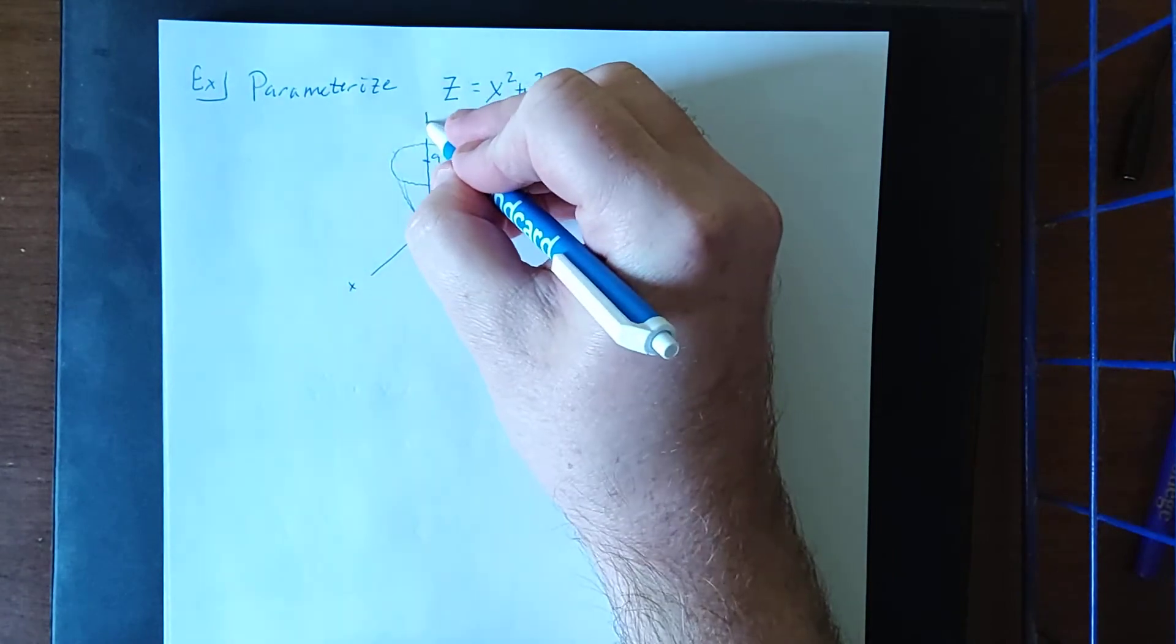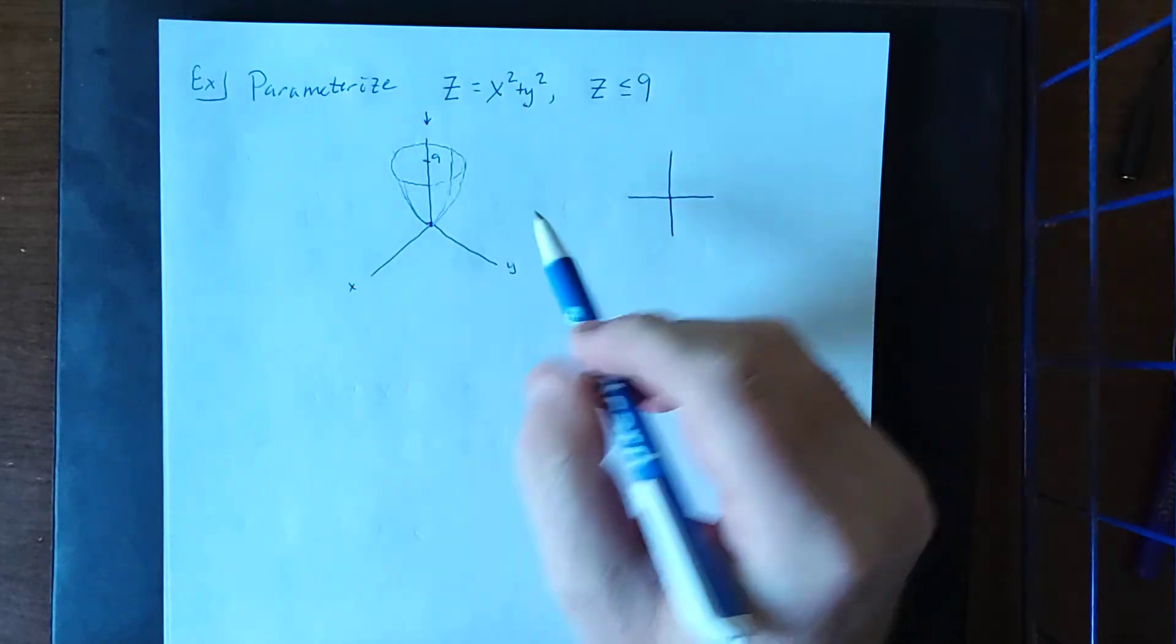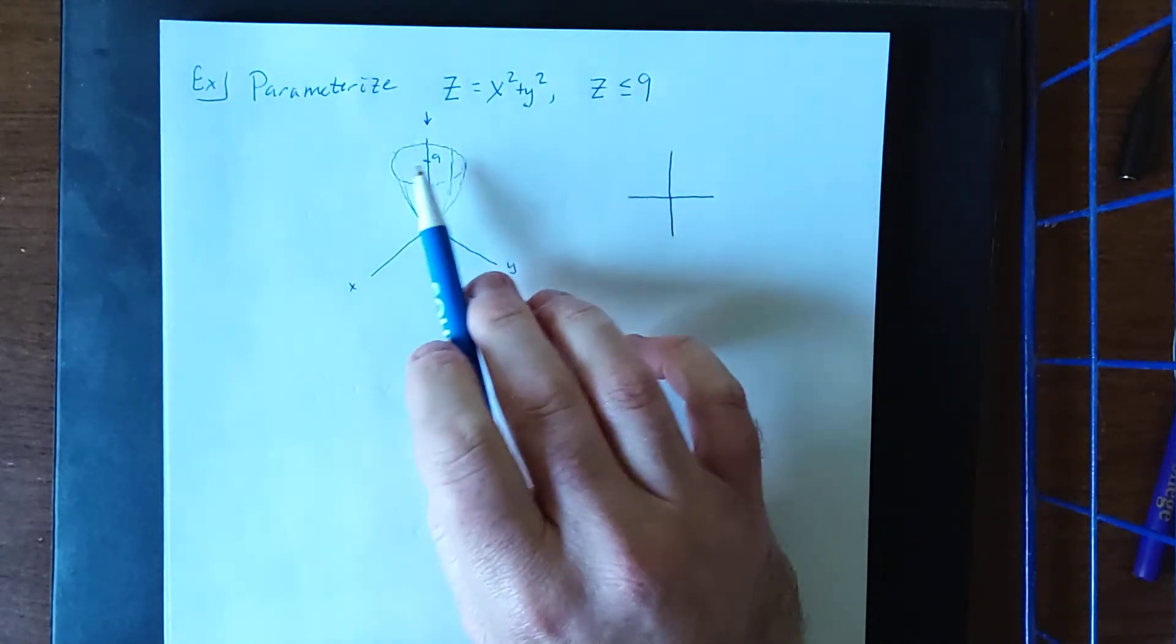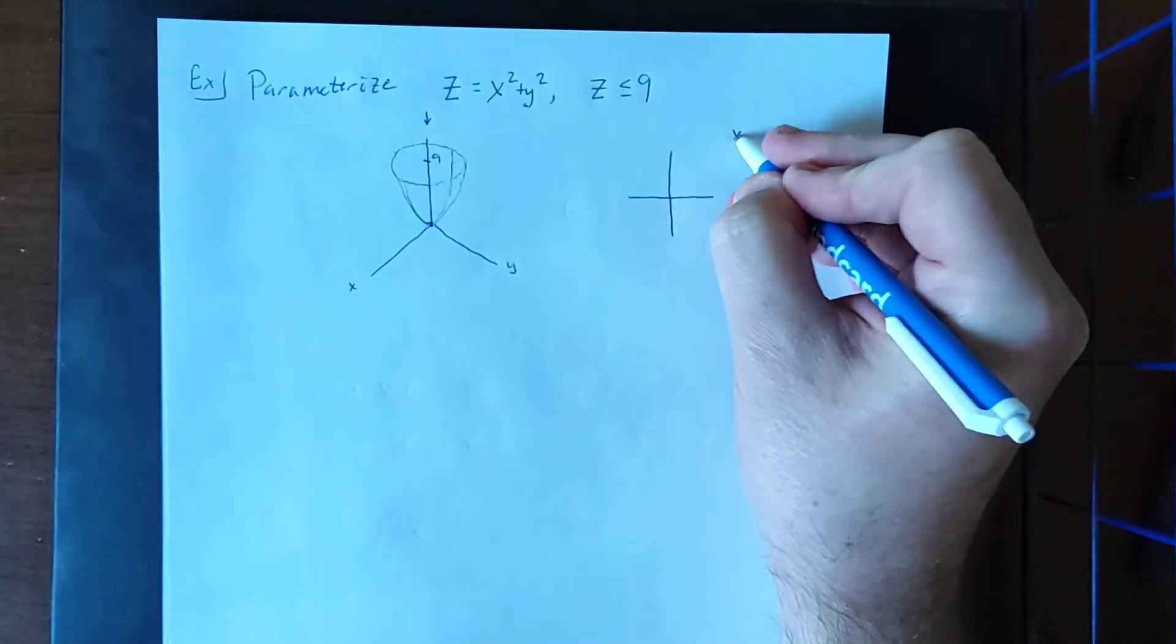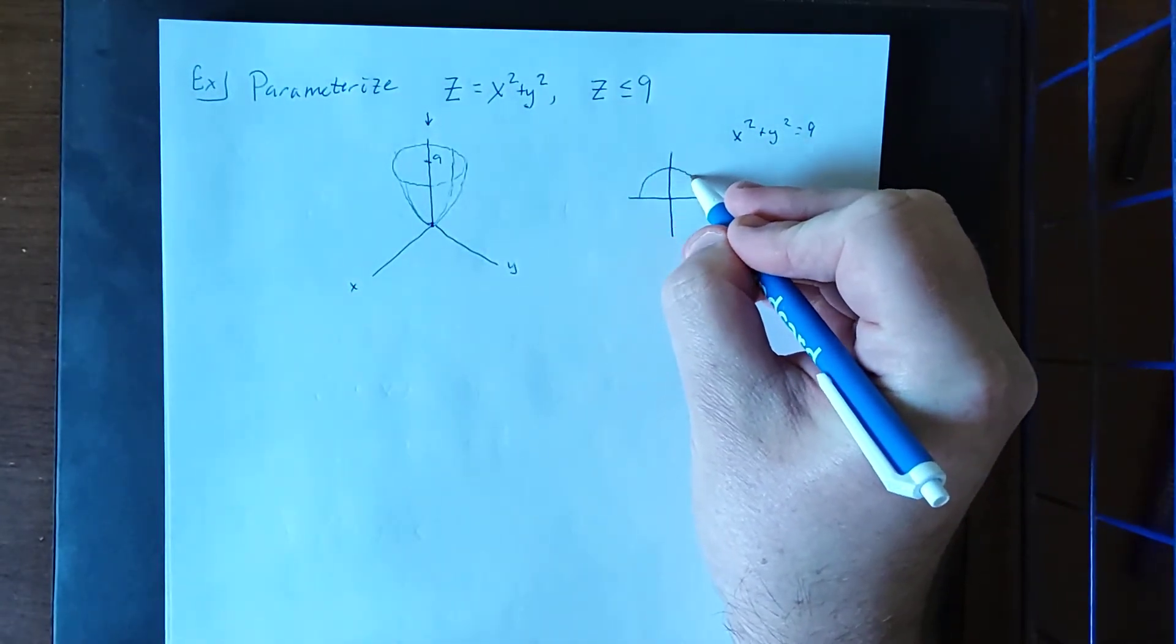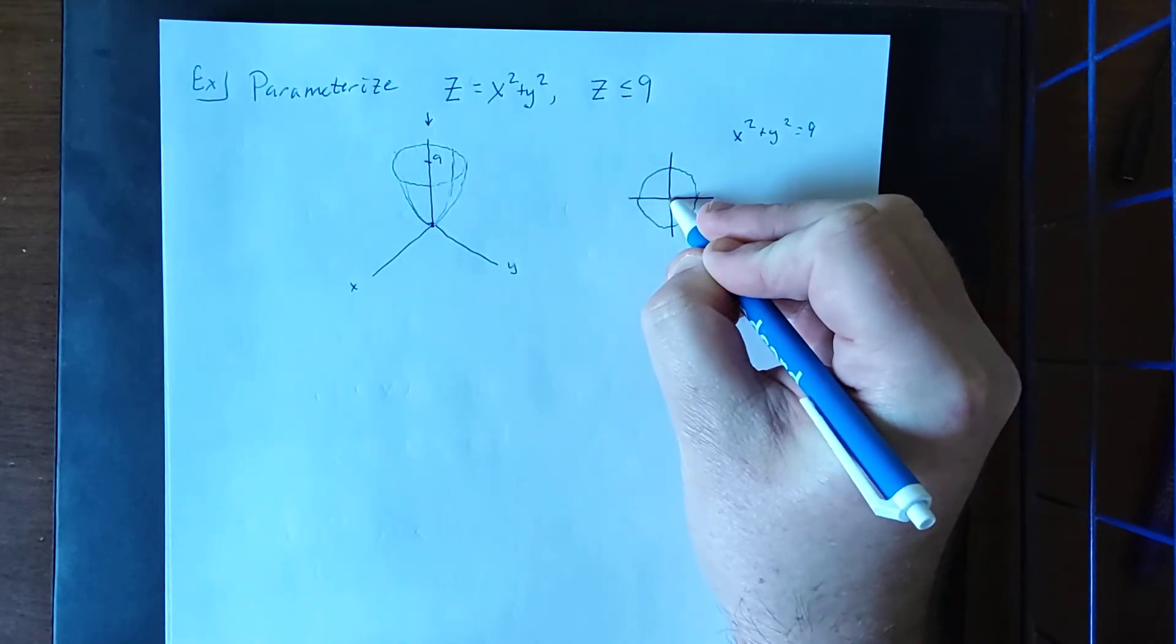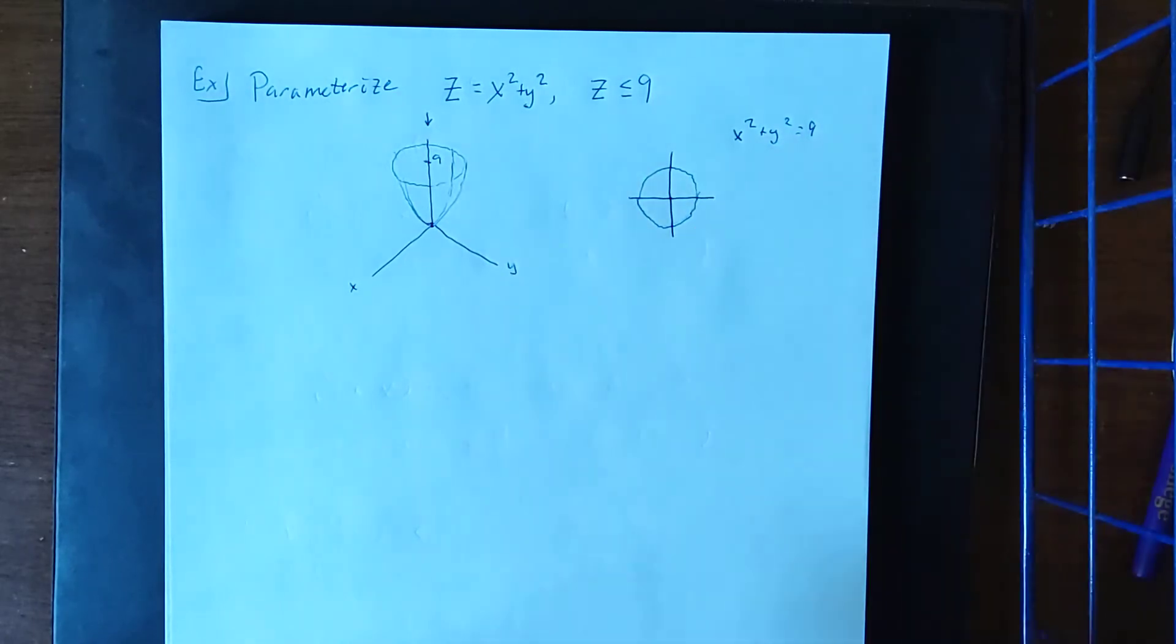Now if we were to look directly down the z-axis and look into the xy trace, this would be as though we're saying set z equal to its boundary 9 and see what we see. Now we would have x squared plus y squared equals 9, and as a result we would be seeing a circle looking down from above where the lowest point is in the middle and then it slowly grows up as we go out.